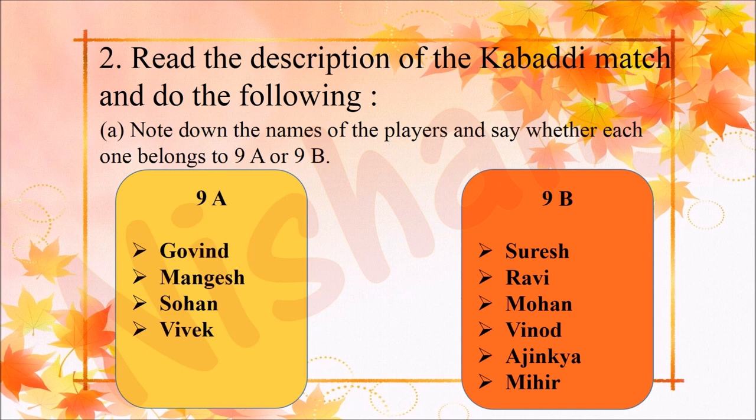The players of 9A were Govin, Mangesh, Sohan, and Vivek. The players of 9B were Suresh, Ravi, Mohan, Vinod, Ajinkya, and Mihir.